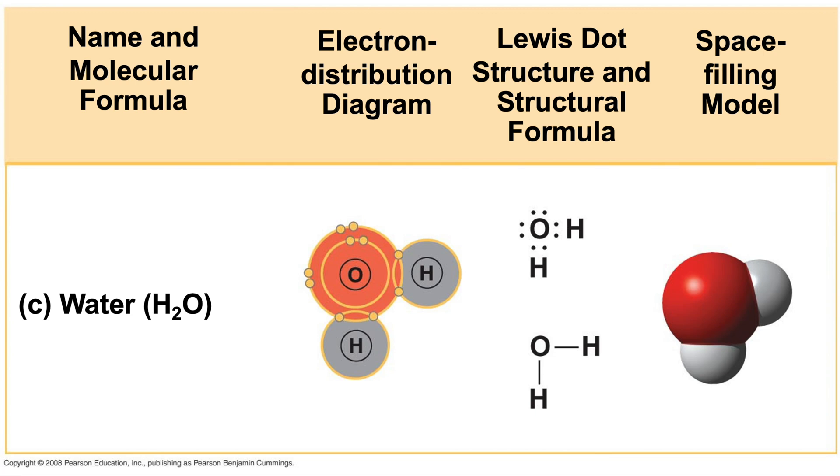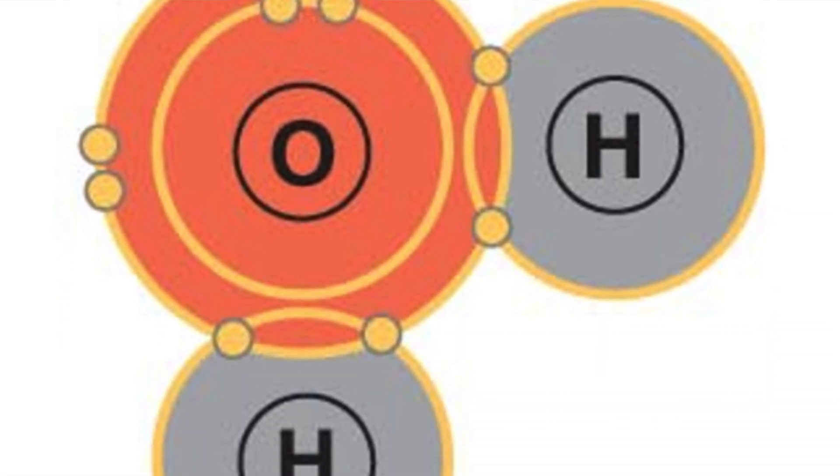Let's start talking about the structure of water, because that's going to be really important in understanding exactly why water behaves the way it does. Water is a polar covalent molecule. A polar covalent molecule has two parts: covalent and polar. Covalently bonded molecules are molecules comprised of atoms which share valence electrons. In the case of water, it has a central oxygen atom and two hydrogen atoms in a bent fashion, with two pairs of electrons being shared between the oxygen and hydrogen atoms.